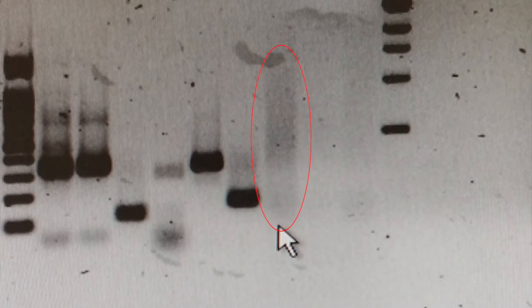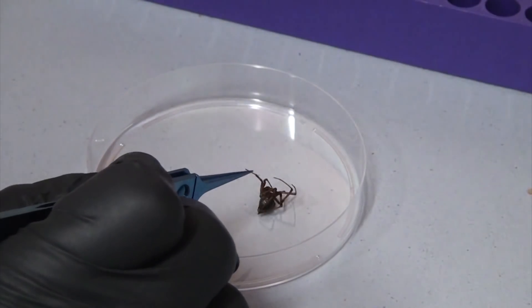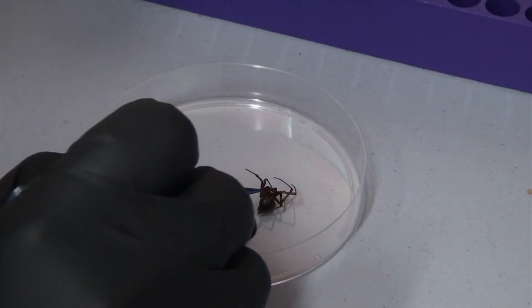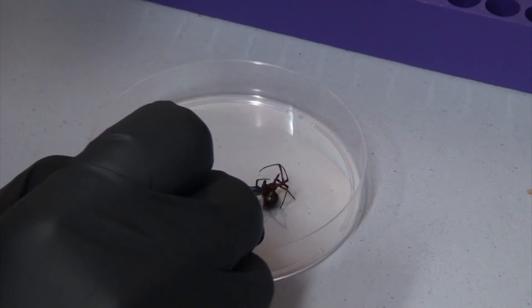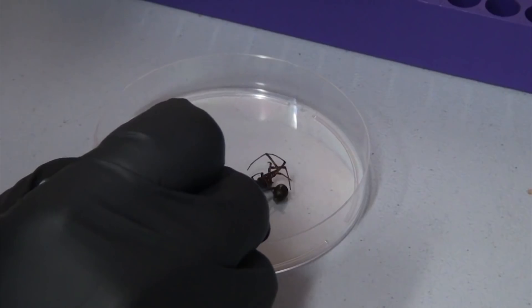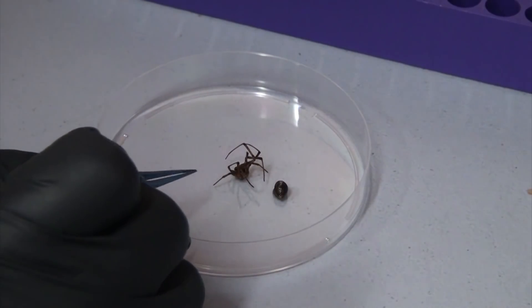This actually matches up with an earlier result where we managed to get a whiff of spider DNA, but at the time assumed it had just been damaged by the extraction protocol. Now the running hypothesis is that the ethanol preserves the spiders and prevents them from rotting, but it doesn't stop the spider's native enzymes from destroying the DNA. And this kind of makes sense. When I cut into the spiders, they were mush on the inside, meaning everything was damaged.